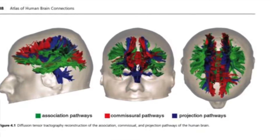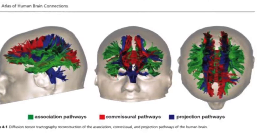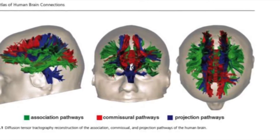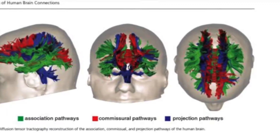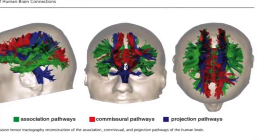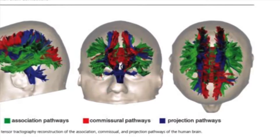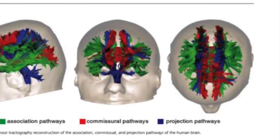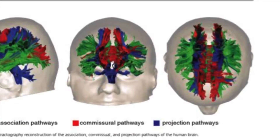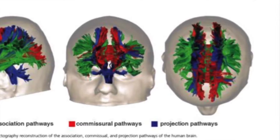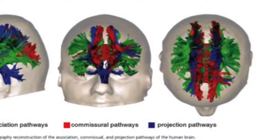Praxis is making considered decisions about how to act in a given situation. The commissural pathways have been coloured red. These neural connections run between the left and the right hemispheres, allowing the hemispheres to work together. They play a significant role in motor — that's movement of the body — perceptual and cognitive functions.